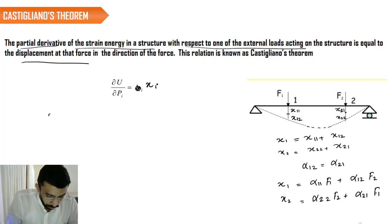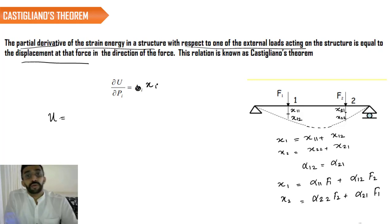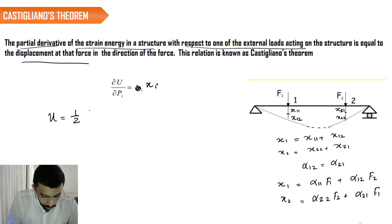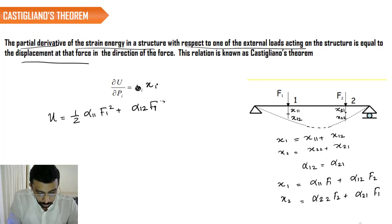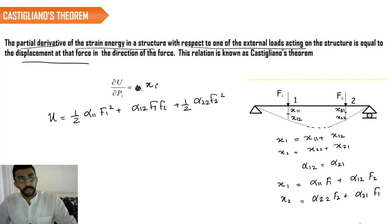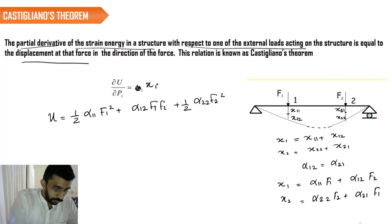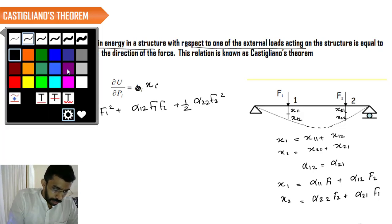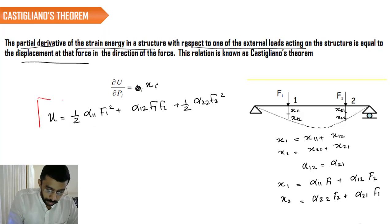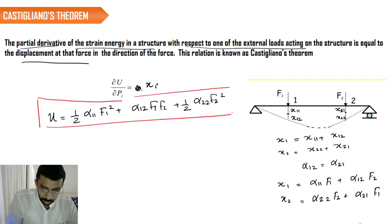And we know we have derived the general expression for U as half into alpha 11 F1 squared plus alpha 12 F1 F2 plus half into alpha 22 F2 squared. This was the general expression that we have derived for Maxwell's equation. Say this is equation A.